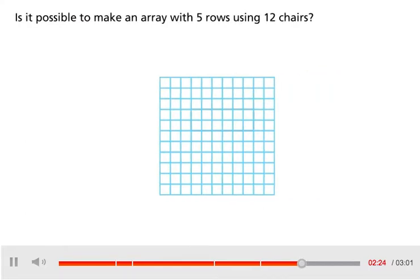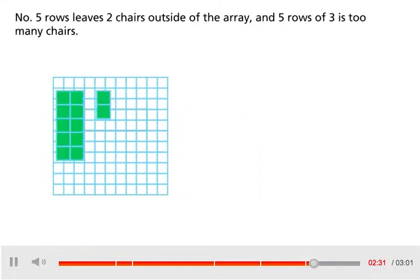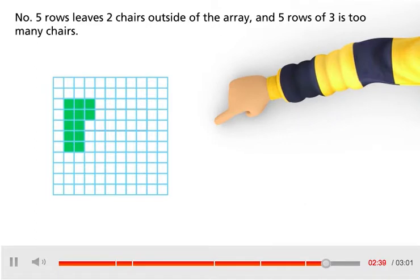Is it possible to make an array with 5 rows using 12 chairs? No. 5 rows leaves 2 chairs outside of the array and 5 rows of 3 is too many chairs. So, 5 is not a factor of 12.